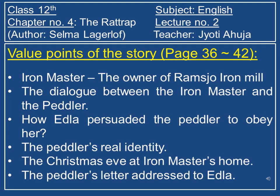We will now proceed with the value points of the story to be covered from page number 36 to 42: the Ironmaster, who was the owner of Ramso Ironmill; the dialogue between the Ironmaster and the peddler; how Edla persuaded the peddler to obey her; the peddler's real identity; the Christmas Eve at the Ironmaster's home; and the peddler's letter addressed to Edla.